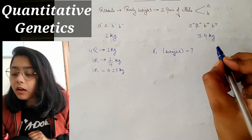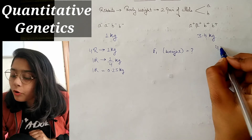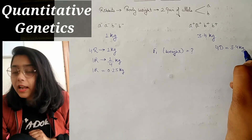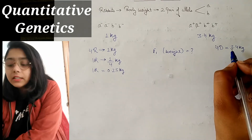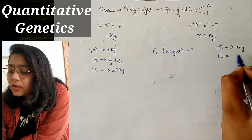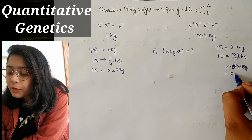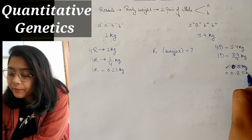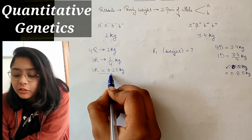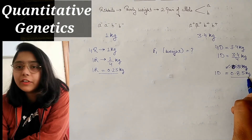जो हमारा dominant gene है, उसके बारे में बात करते हैं. इसमें हमारे 4 dominant alleles responsible हैं 3.4 kg weight के लिए. तो 1 dominant allele responsible है 3.4/4 kg weight के लिए, solve करें तो around 0.85 kg आता है. It means हमारे पास 2 informations आ गई हैं — recessive gene 0.25 kg weight contribute कर रहा है, और dominant allele 0.85 kg weight contribute कर रहा है.